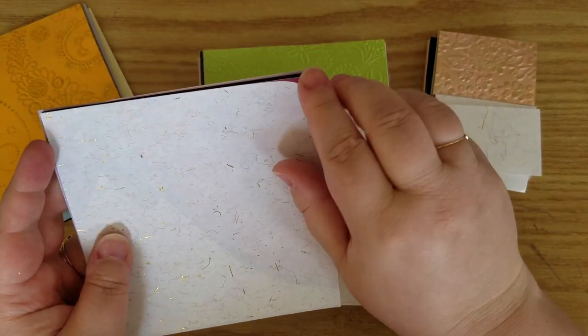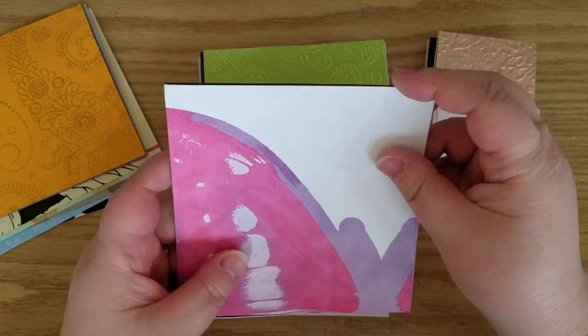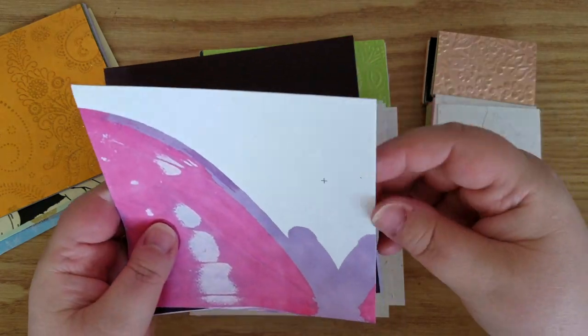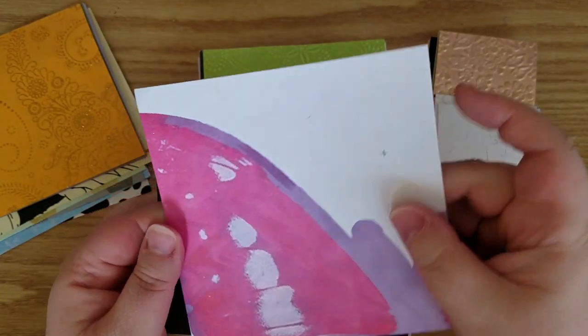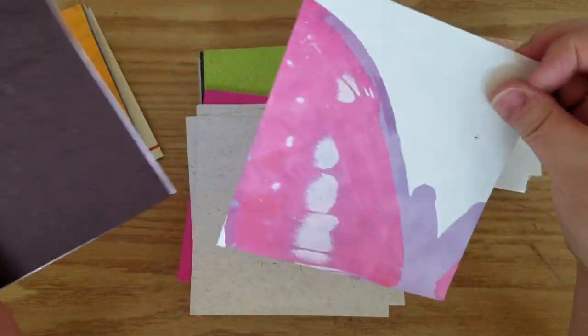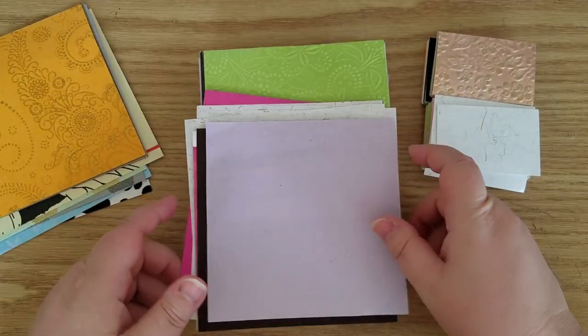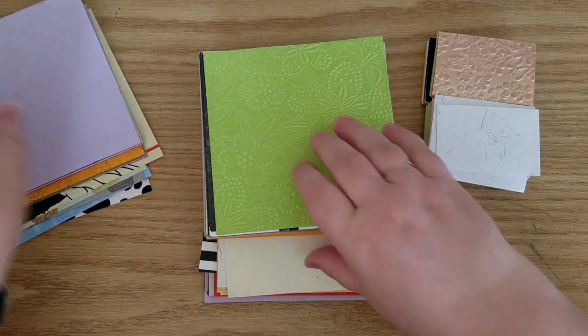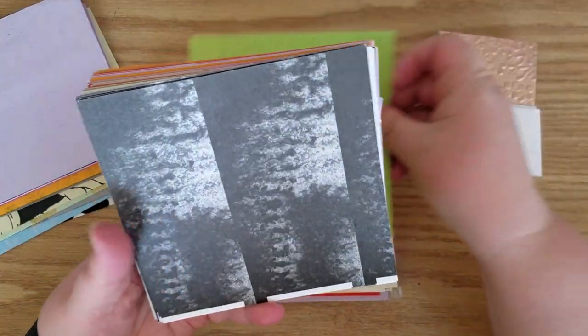That one's really fun. That looks like it's part of a butterfly. Oh, it's double-sided, and that one's very thick. Some neat textures. This one looks like it got scrunched, but it'll still work.